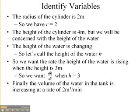Finally, the volume of the water in the tank is increasing at a rate of 2 meters cubed per minute. That was the rate that water was being poured in, so that's going to be our change in volume with respect to time. So we could say dV/dt is going to be equal to 2.